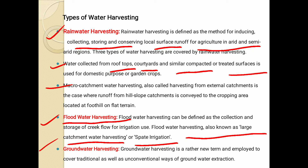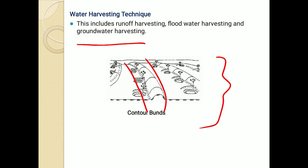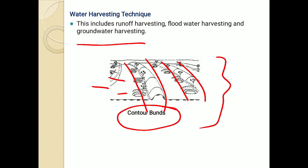Next one is groundwater harvesting. Groundwater harvesting is a rather new term, employed to cover traditional as well as unconventional ways of groundwater extraction. These are the different concepts related to water harvesting. Now you can see the contour bunds and how they are useful at the time of water harvesting. These bunds are built across the slope, so all excess runoff water is collected and stopped by the bunds, providing water to the plants as well. These are very useful — they control soil erosion and also increase the infiltration rate of water, so contour bunding plays an important role in water harvesting technique.